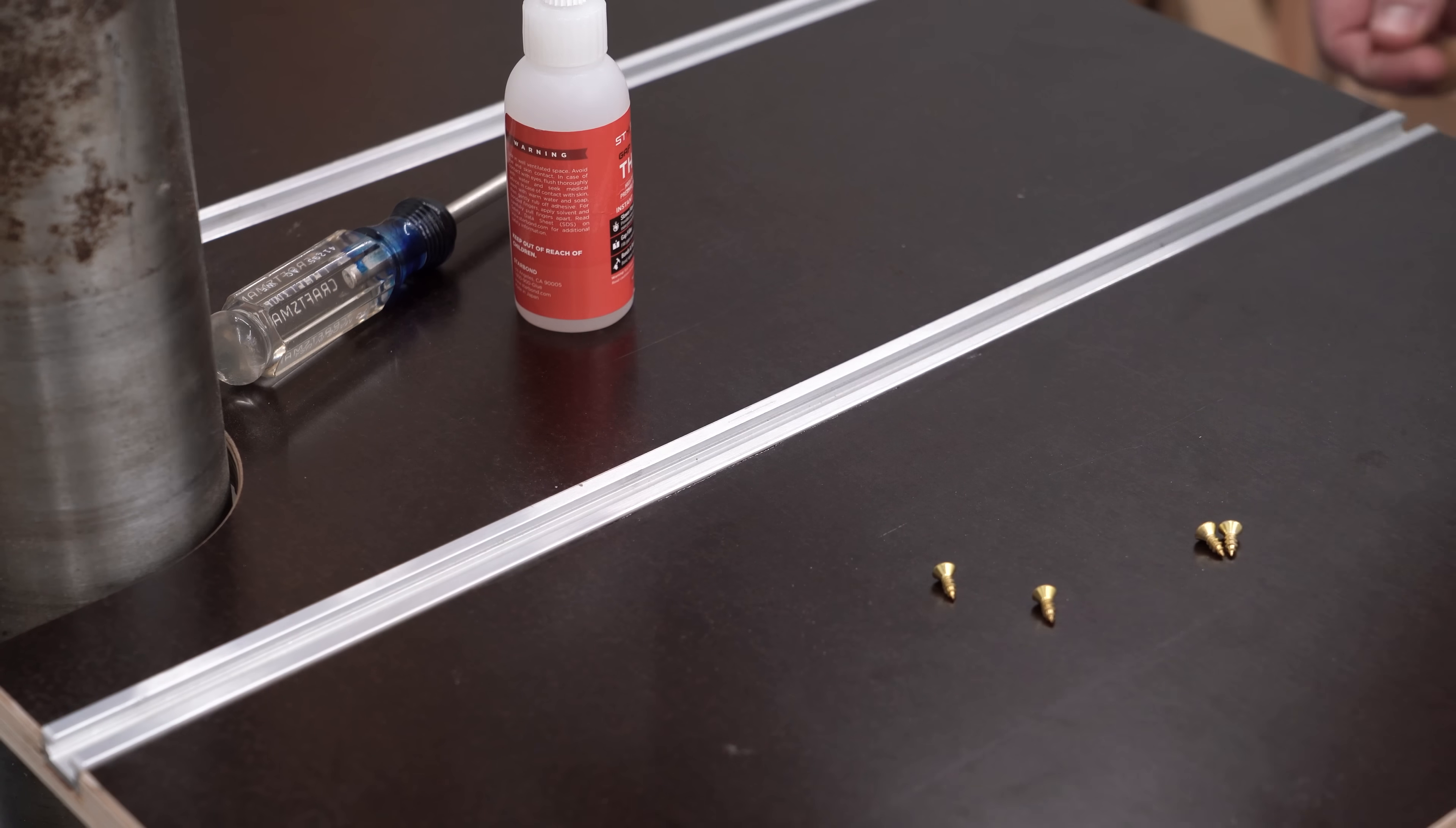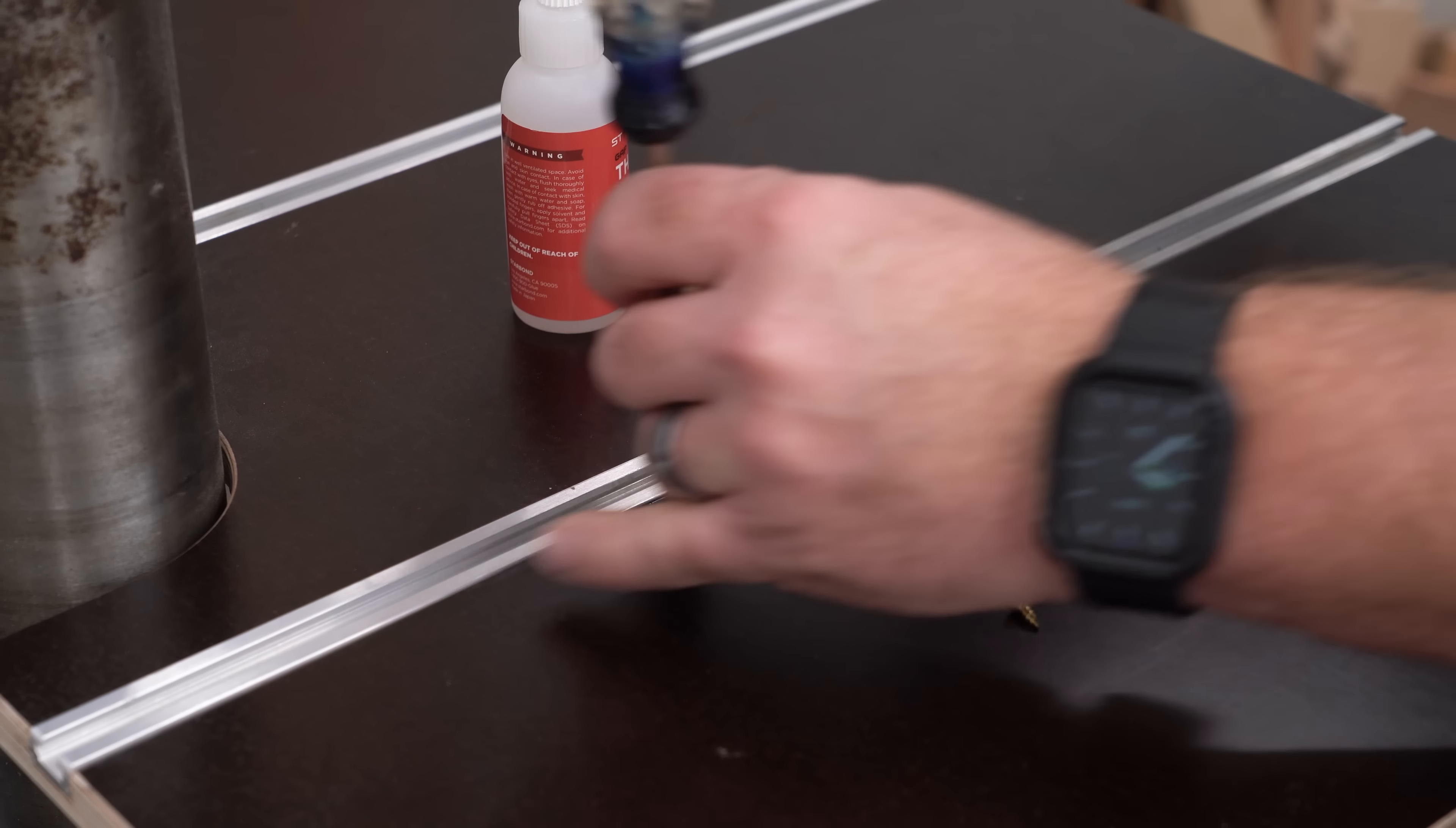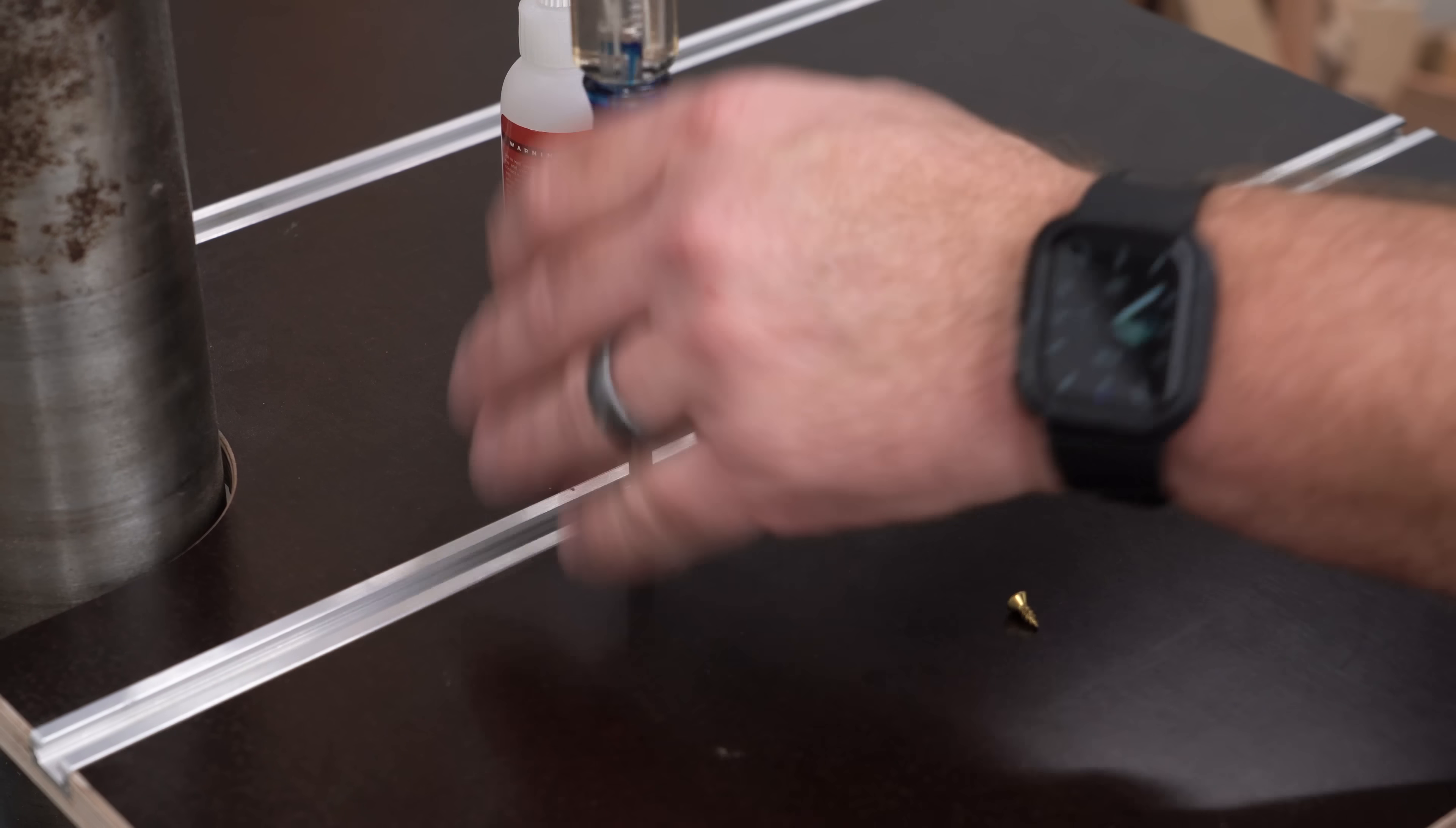Also, you will inevitably end up needing to drill and countersink new holes in aluminum track, which can be an inconvenience.